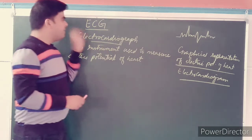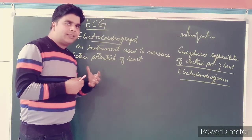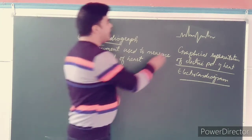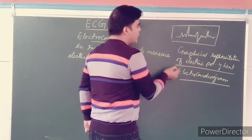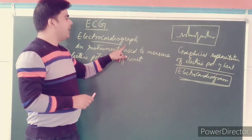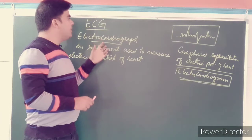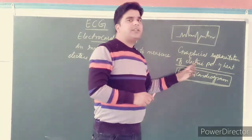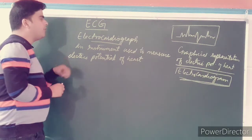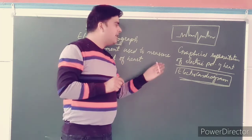So remember: the instrument/machine we call Electrocardiograph, and the graphical representation on paper we call Electrocardiogram. There is sometimes confusion between the two — Electrocardiograph is the machine, and Electrocardiogram is the graphical representation printed on paper.